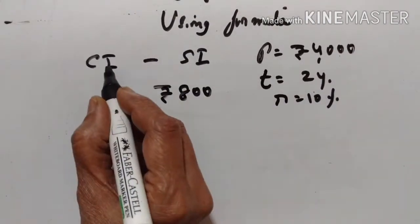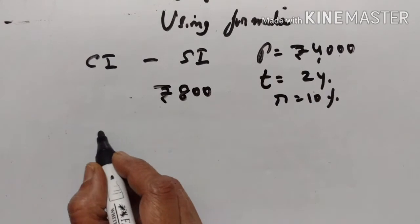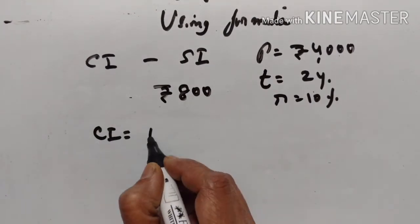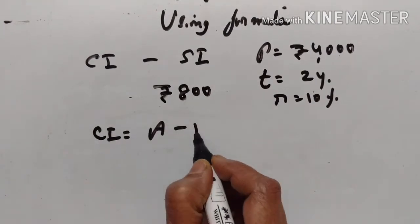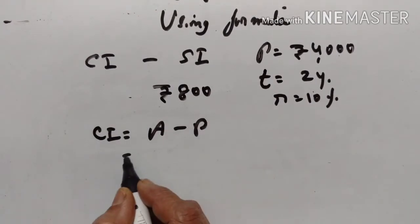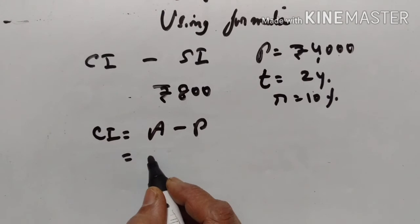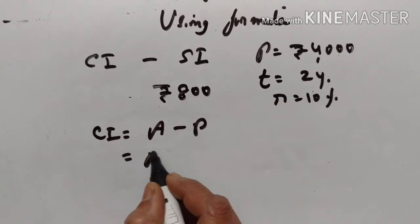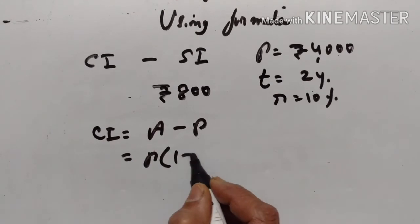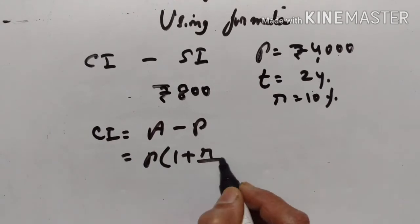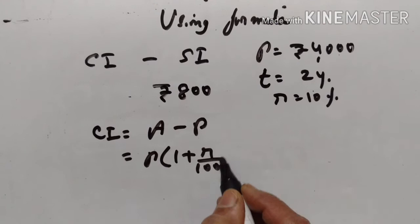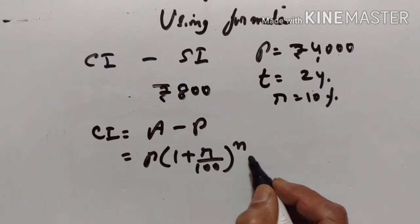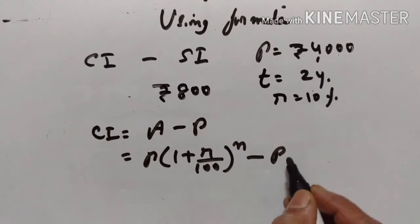Let us find compound interest. Compound interest is equal to amount minus principal. Amount is equal to P into 1 plus R upon 100 raised to the power of N, that is number of years, minus principal.